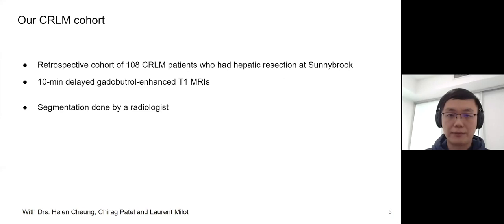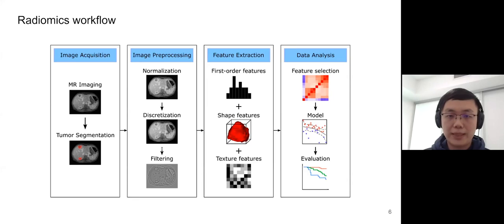I will briefly introduce the patient cohort of my study. We used a retrospective cohort of 108 patients from Sunnybrook. The sequence we used is a 10-minute delayed hepatocellular enhanced T1 MRI from patients who were waiting for surgery, and the tumor contours were segmented by a radiologist. Instead of using a single handcrafted feature, we want to incorporate all information from MRI, and one such tool is called radiomics. Radiomics is an emerging field in medical imaging analysis that is slowly gaining attention in the bioinformatics field. It extracts a large number of predefined features from images to describe the intensity histogram, shape, and texture of tumors.